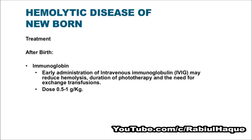Another treatment option is the use of intravenous immunoglobulin (IVIG). Early administration of IVIG may reduce hemolysis, duration of phototherapy, and the need for exchange transfusions. The dose is usually 0.5 to 1 g per kg body weight.